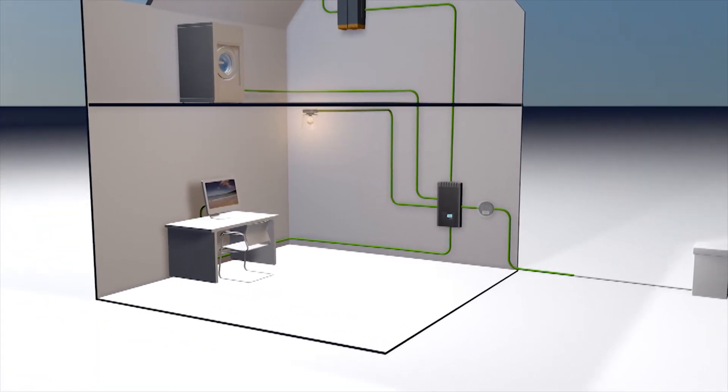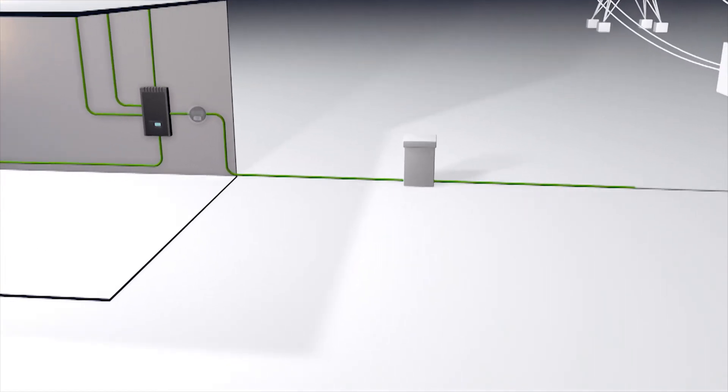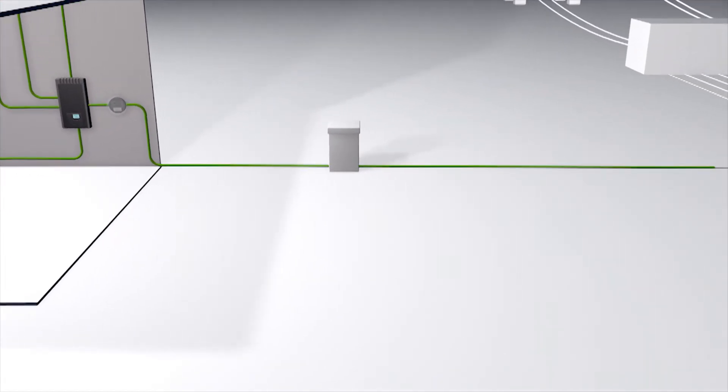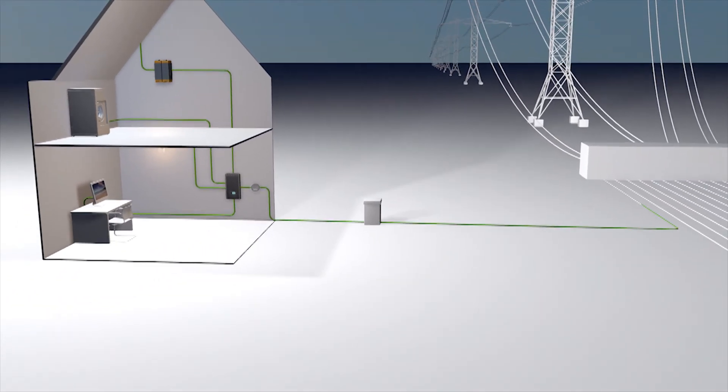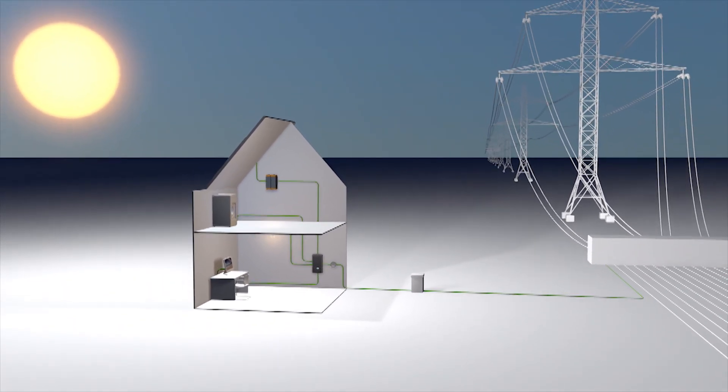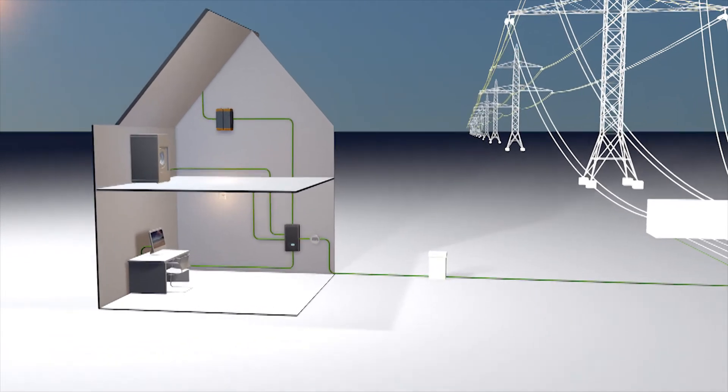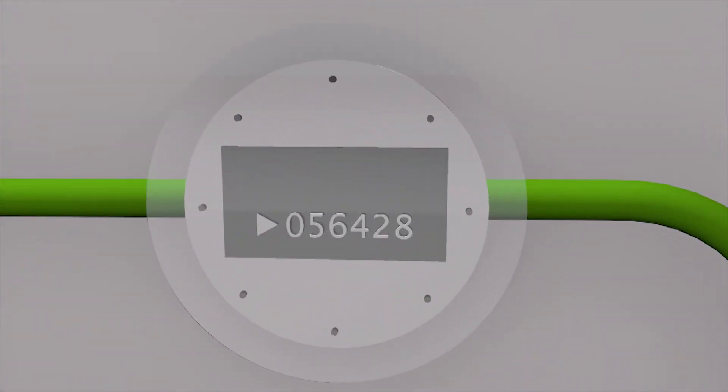Under such a condition, the net surplus power is fed to the grid. In most countries, the consumer can offset his electric bills in this manner. This facility is called net metering. You can see that the net meter is reading a net production as the net power is being fed to the grid.